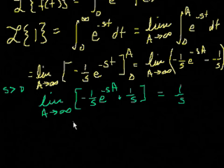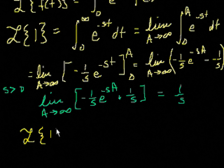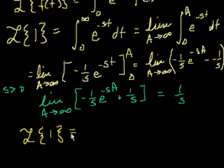But for now, we'll just work through some of the more basic ones. But this can be our first entry in our Laplace transform table. That the Laplace transform of f of t is equal to 1 is equal to 1 over s.